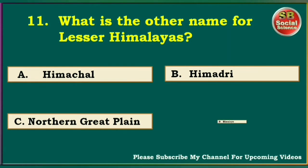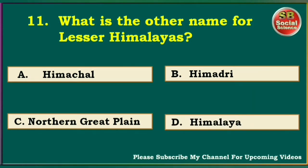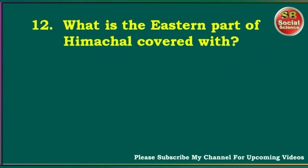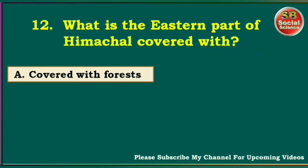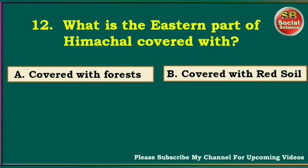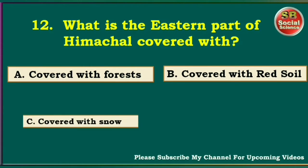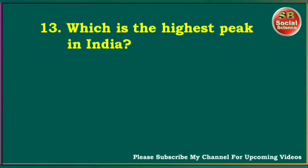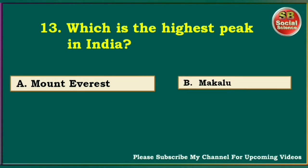What is the eastern part of Himachal covered with? Covered with forest, covered with red soil, covered with snow, covered with water. The right answer is covered with forest. Which is the highest peak in India? Mount Everest, Makalu, K2 or Mount Godwin-Austin, Kanchanjunga. The right answer is K2 or Mount Godwin-Austin.